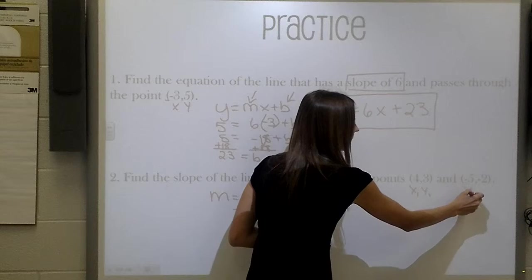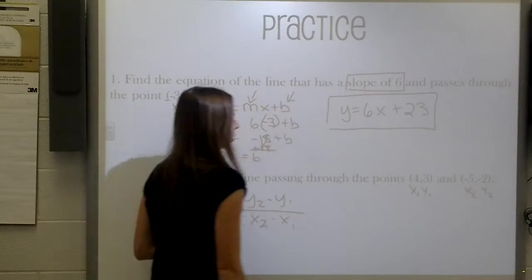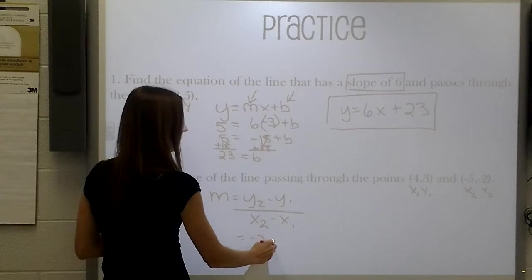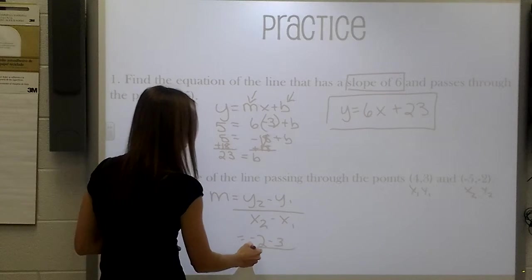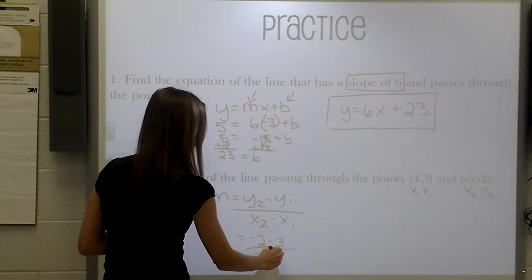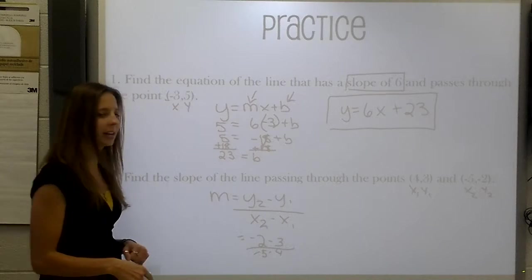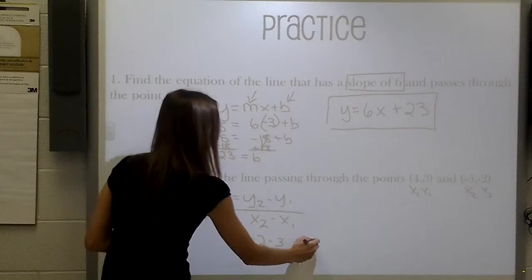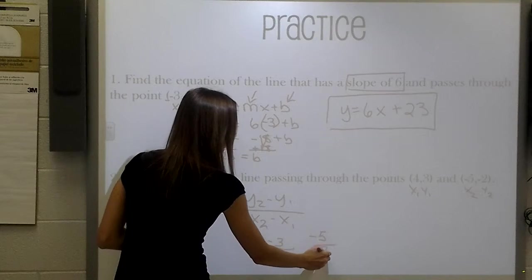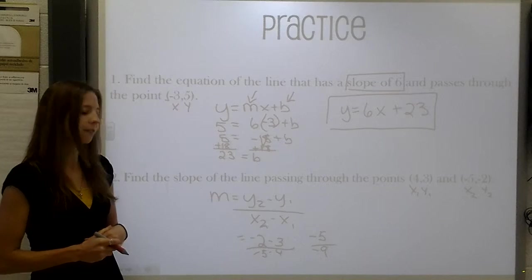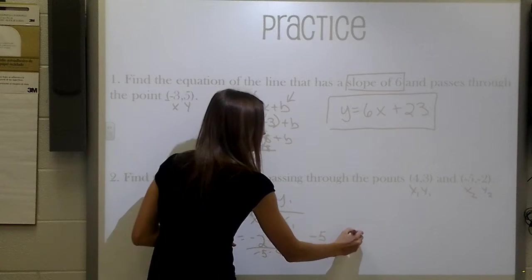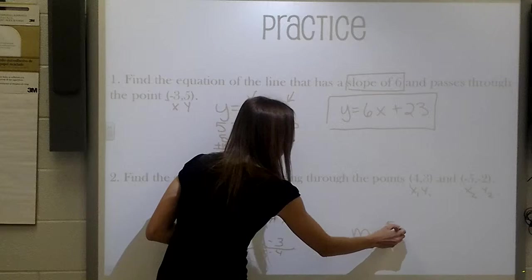That's x1, y1 and x2, y2. So we're just going to go ahead and substitute in. So negative 2 minus 3 over negative 5 minus 4. Negative 2 and a negative 3 is going to give us a negative 5 over a negative 5 and a negative 4 will give us a negative 9. Again, because negative 5 divided by negative 9, a negative divided by a negative gives us a positive, our slope is going to be 5 9ths.